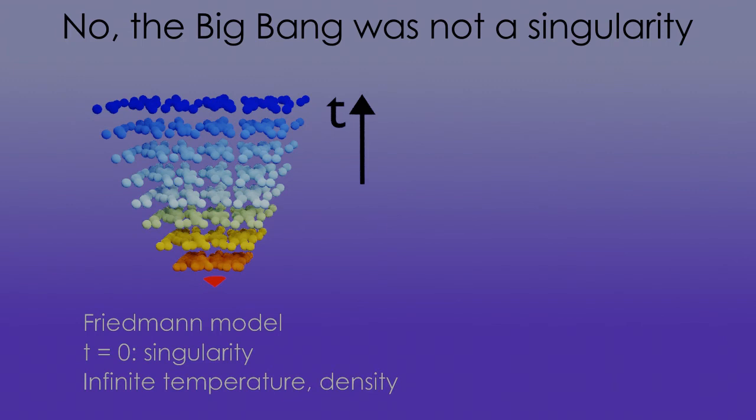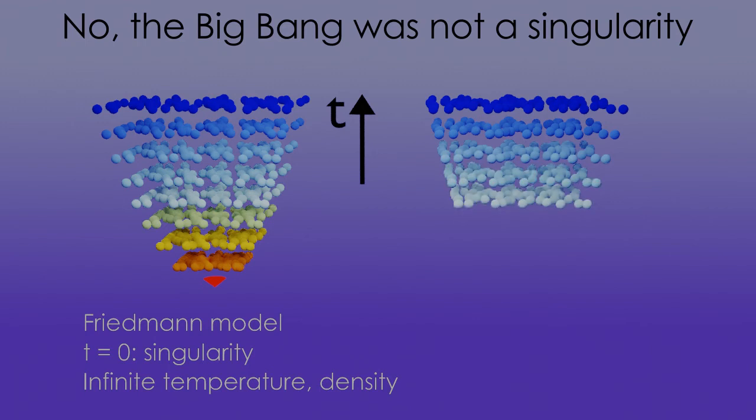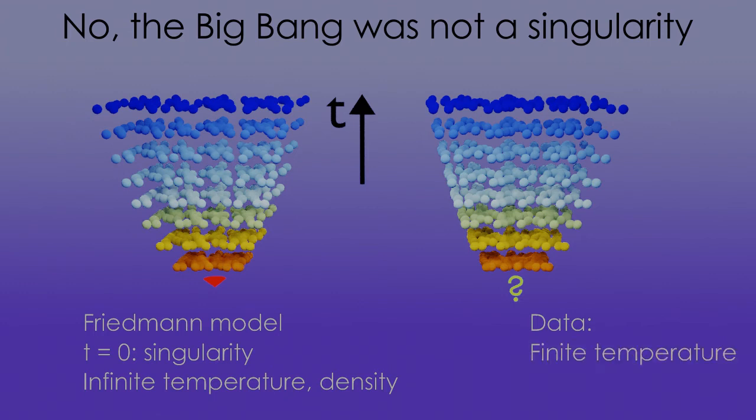But, how does this model compare with reality? Well, we have data suggesting that the temperature was not infinite. And, according to other data, very early, there was extra-fast expansion, called inflation.